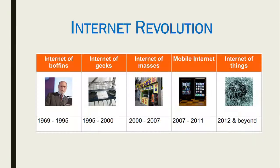Before going into Internet of Things itself, we'll go through the evolution of the Internet. This is a pictorial representation of different eras of the Internet. The Internet has been in existence for decades. Its popular form has only been used for about two decades, but the original implementation has existed longer. We can divide the Internet era into: Internet of Boffins, Internet of Geeks, Internet of Masses, Mobile Internet, and Internet of Things — different eras.